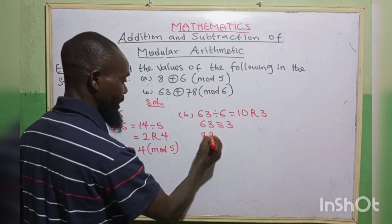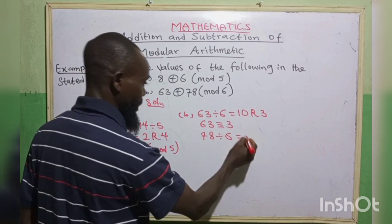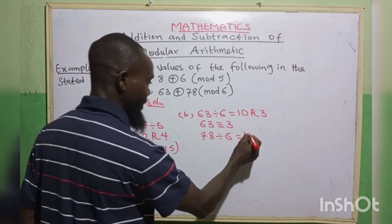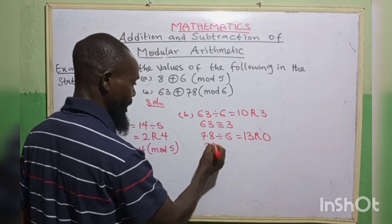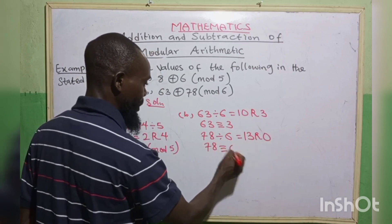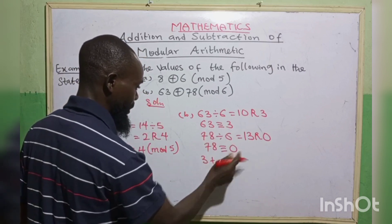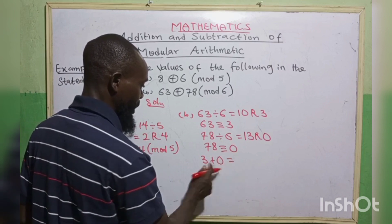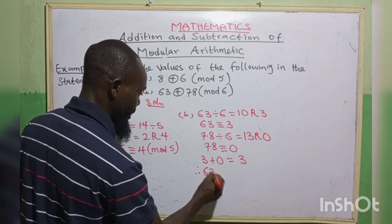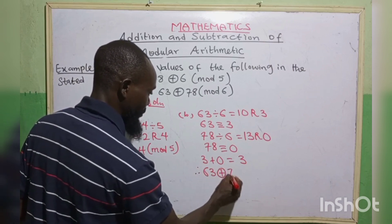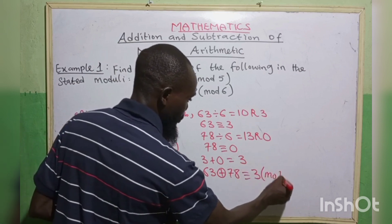Part B: 63 plus 78 in modulo 6. We need not add two large numbers directly — we can solve each one separately. 63 divided by 6 gives 10 remainder 3, so 63 is equivalent to 3. 78 divided by 6: 6 goes into 78 giving 13 remainder 0, so 78 is equivalent to 0. We then sum: 3 plus 0 equals 3. Therefore, 63 plus 78 is equivalent to 3 in modulo 6.